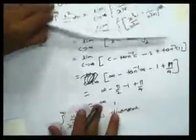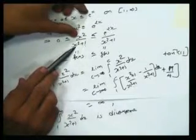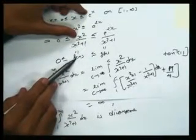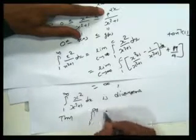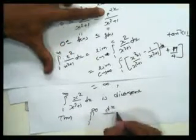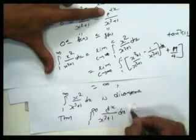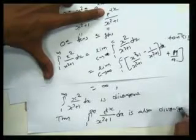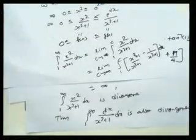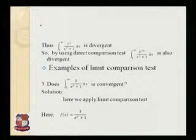Since the smaller integral x²/(x²+1) is divergent, by the Direct Comparison Test the larger integral — from 1 to infinity of e^(2x)/(x²+1) dx — is also divergent. This is how we determine whether an integral is convergent or divergent. Next we look at examples of the Limit Comparison Test.